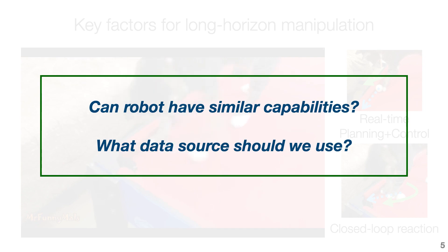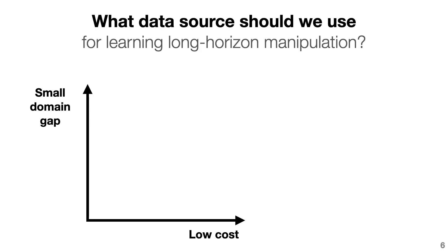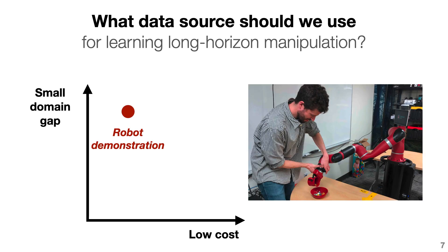Can robots have similar capability for long horizon manipulation? If so, what kind of data should we use to achieve that? When considering the data, we ideally want data that is low cost and aligned with the robot domain. A commonly used data source is robot demonstration, which offers high-quality data without domain gap, but it's expensive and time-consuming to collect, especially for long horizon tasks.